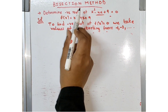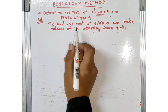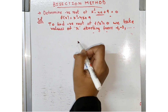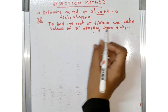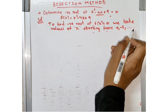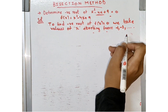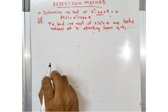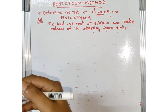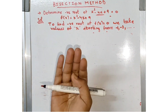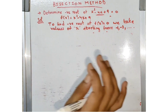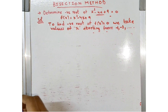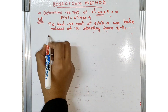First of all, what is a negative root? To find the negative root of f(x) = 0, we have to take values of x starting from -1, -2, and so on — that is, we have to take negative values. That is the negative root, and the remaining process of finding the root using the bisection method is the same as explained in the previous video.